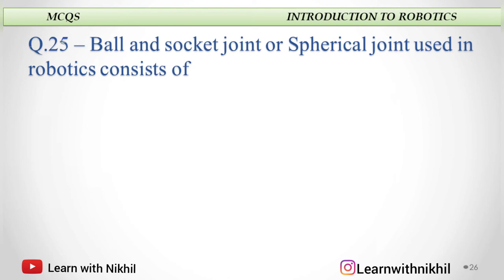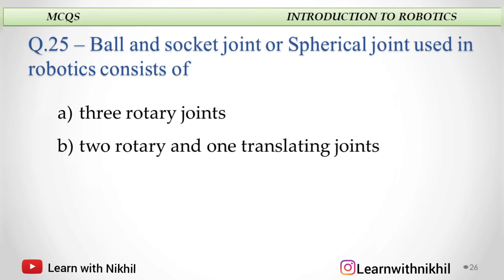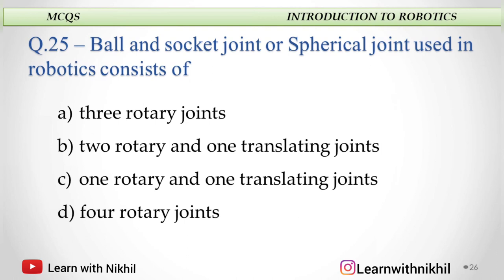Next question: A ball and socket joint (spherical joint) used in robotics consists of — three rotary joints, two rotary and one translating joint, one rotary and one translating joint, or four rotary joints? The answer is three rotary joints.